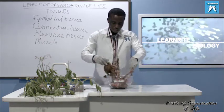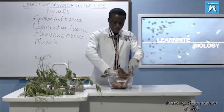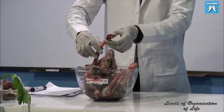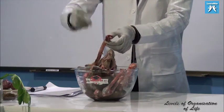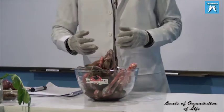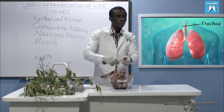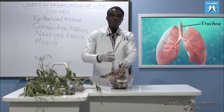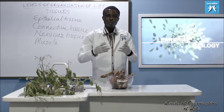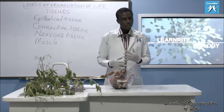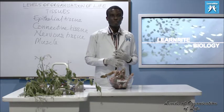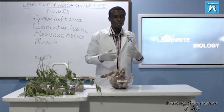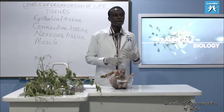Look at the respiratory structure. This is the trachea. Inside the trachea — epithelial tissue. You also have the trachea lined by epithelial tissue. Protection. Some produce secretions. So the mucus produced in the nasal cavity is produced by epithelial tissue.